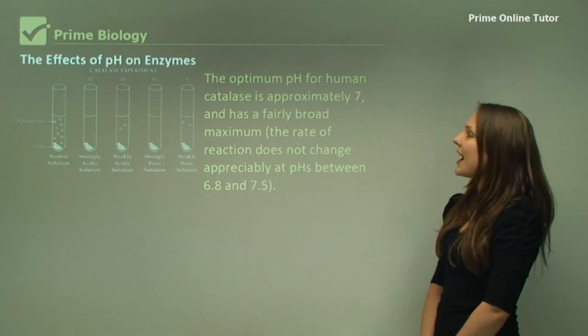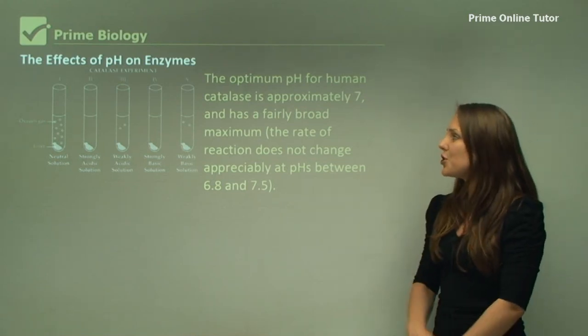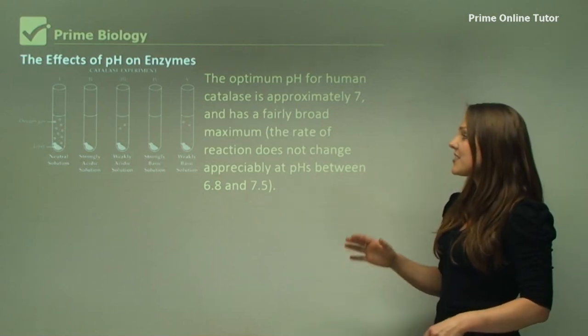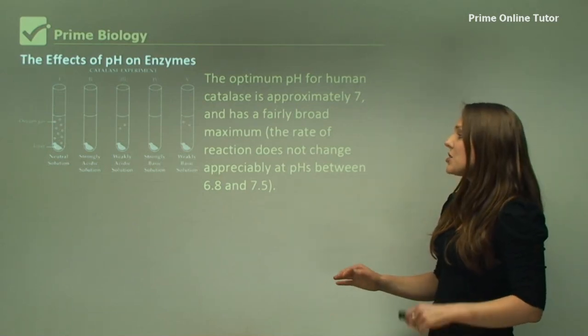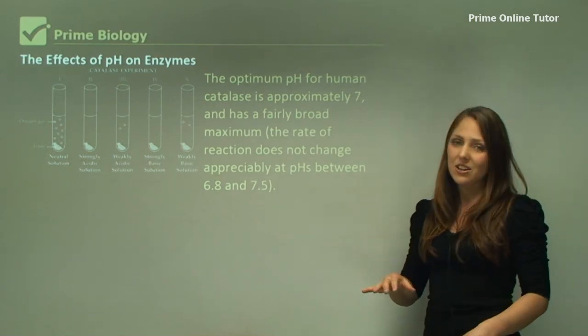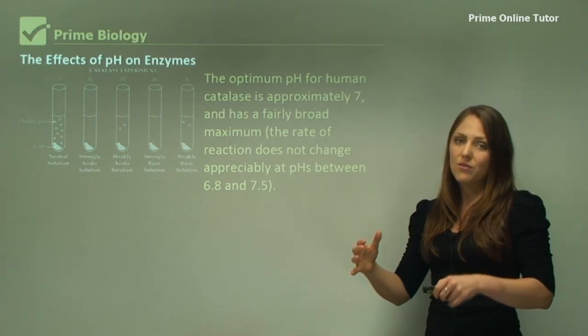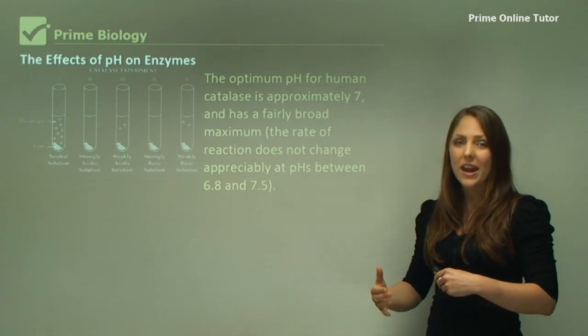The effects of pH. The optimum pH for human catalase is approximately 7 and has a fairly broad maximum. The rate of reaction does not change too much at levels between 6.8 and 7.5. It has a bit more of a range.